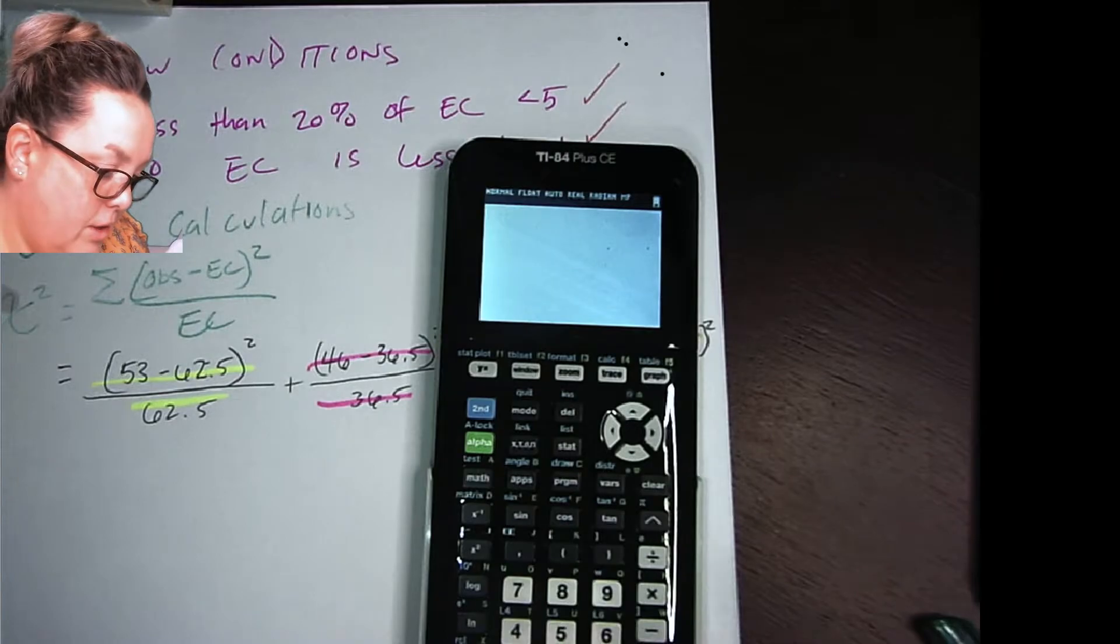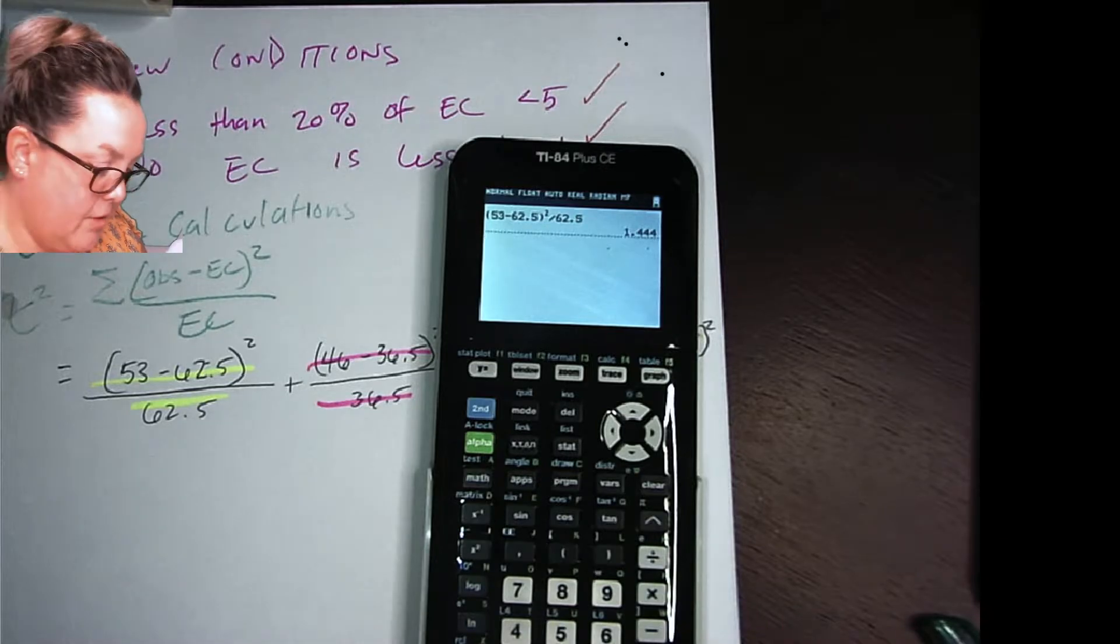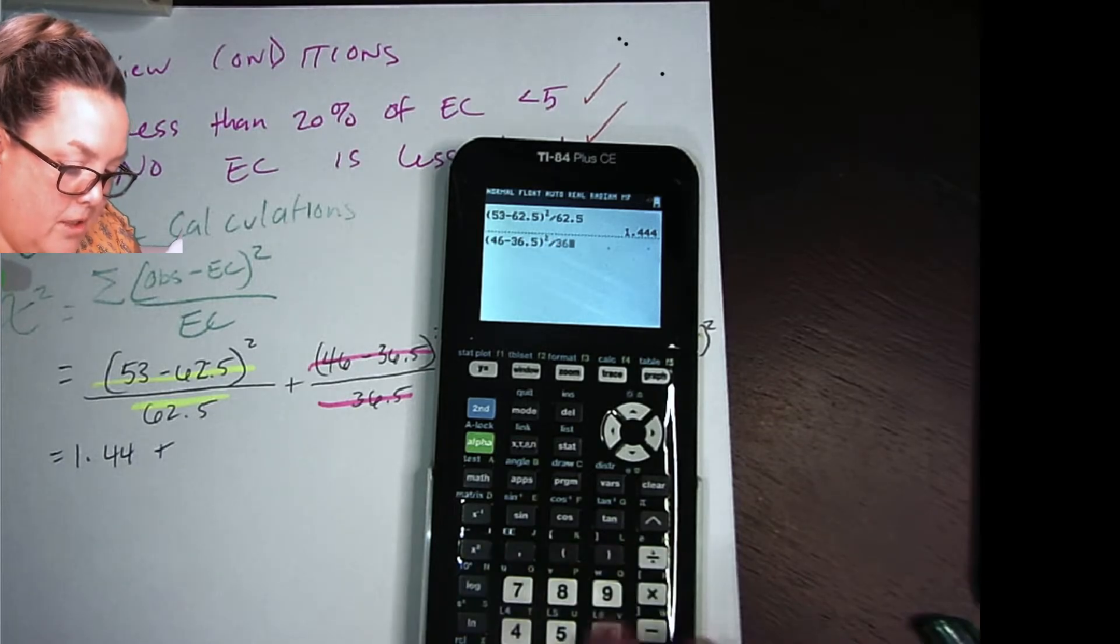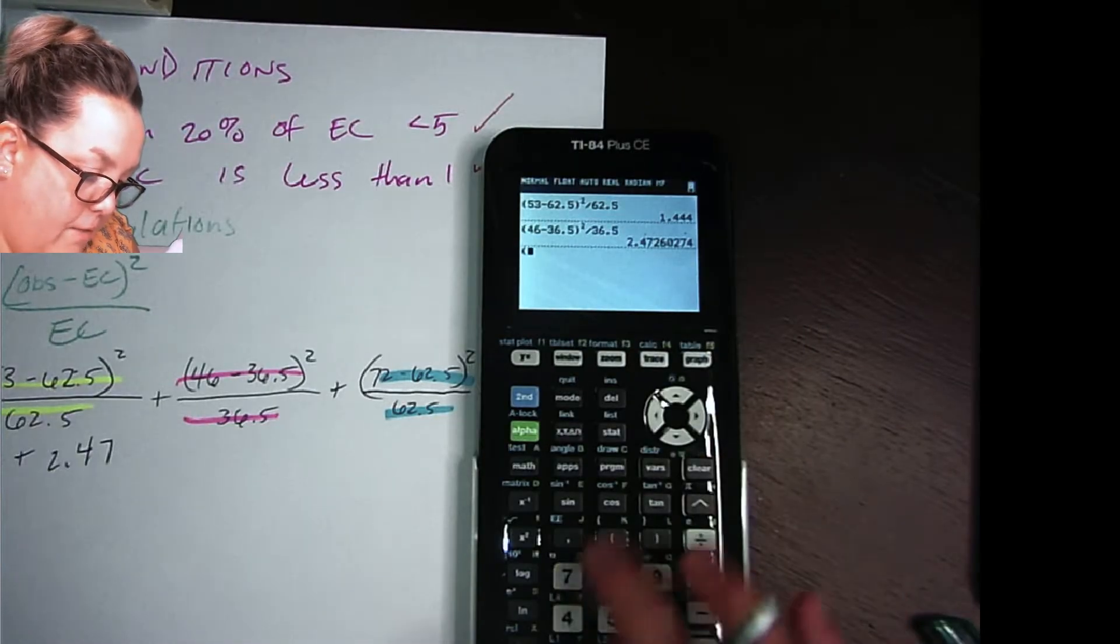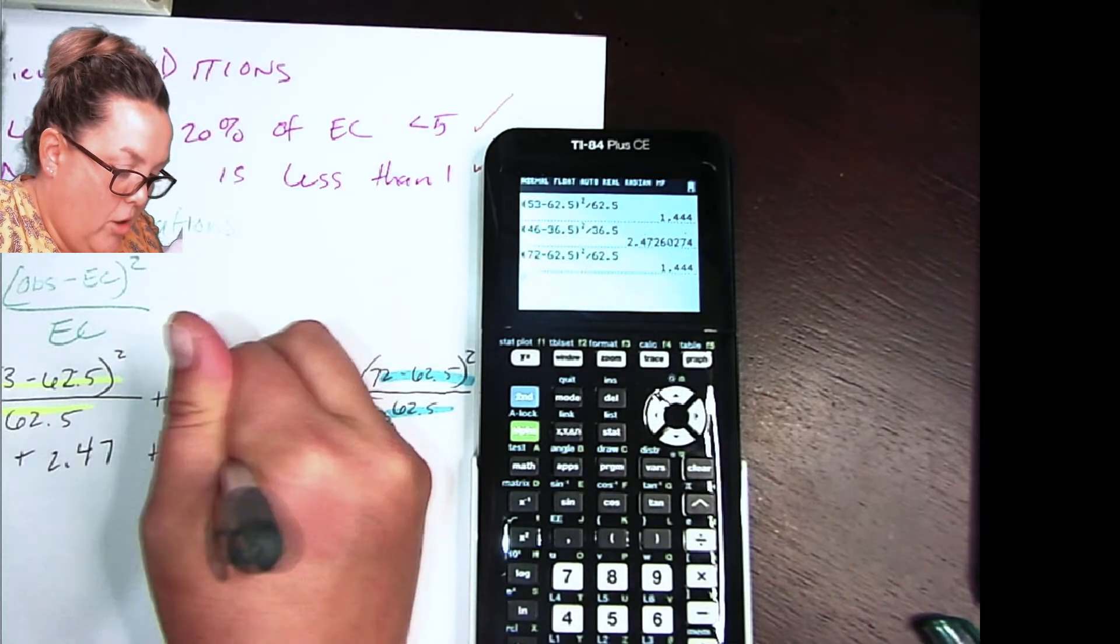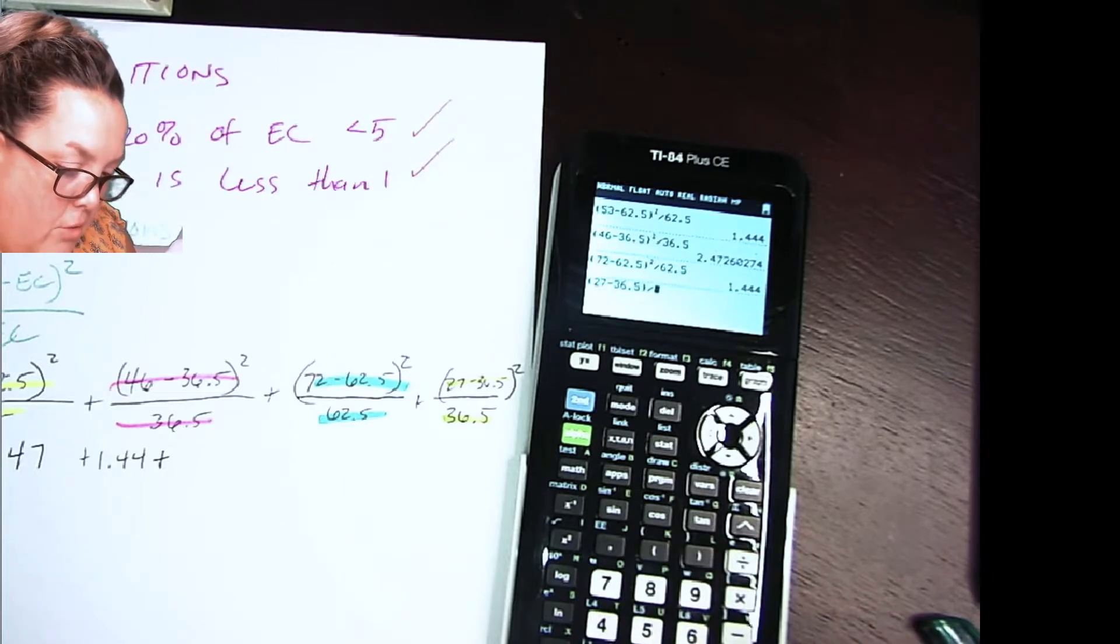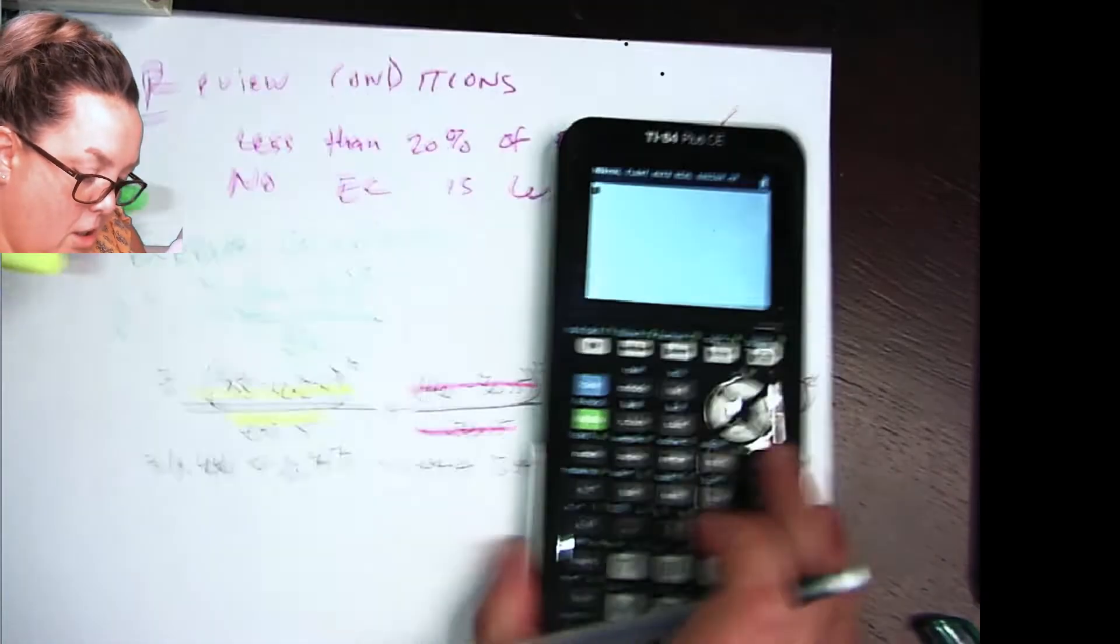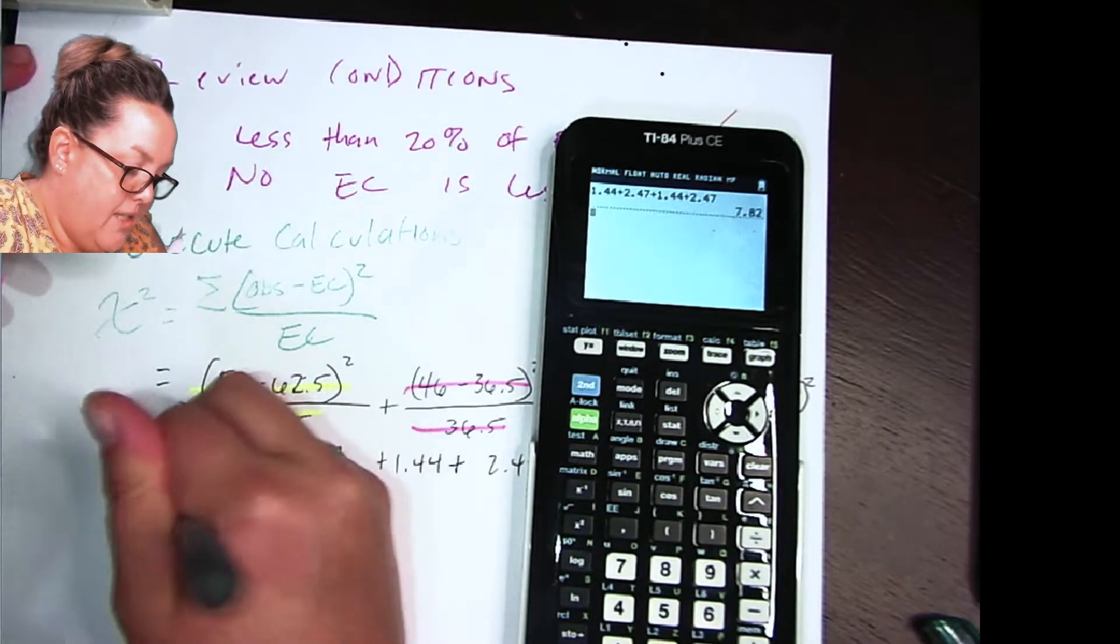I'm going to calculate them in order. So I have 53 minus 62.5 squared divided by 62.5. So the cell chi-squared for this is 1.44. And then we have 46 minus 36.5 squared divided by 36.5. That comes out to be 2.47. And then we have 72 minus 62.5 squared divided by 62.5. And that comes out to be 1.44. And then the last one, we have 27 minus 36.5 squared divided by 36.5. And that gives us 2.47. So now we add them all up to get our chi-squared. We have 1.44 plus 2.47 plus 1.44 plus 2.47. And we come up with a chi-squared test statistic of 7.82.